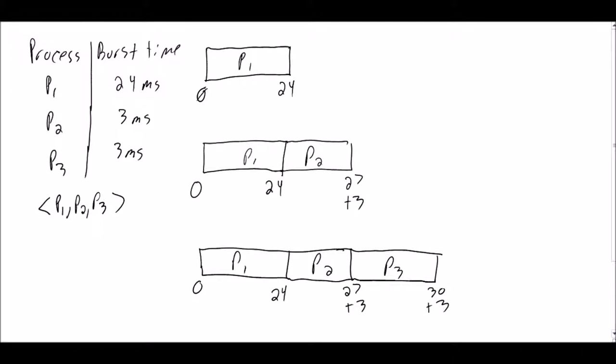So at this point, what we want to do is calculate what's called the average wait time. The average wait time in first-come, first-served can be calculated by taking the numbers at the bottom.